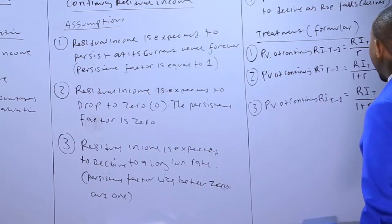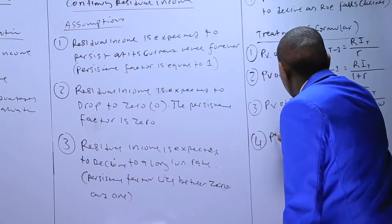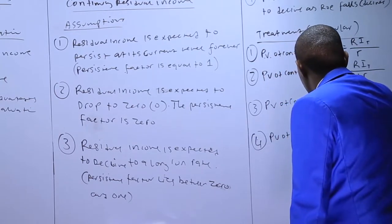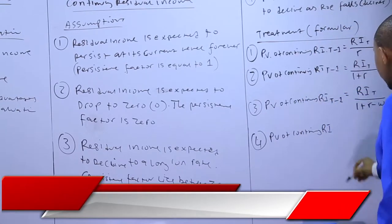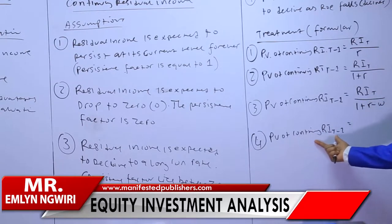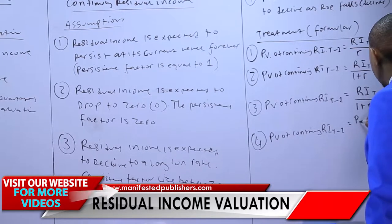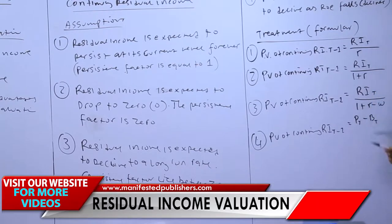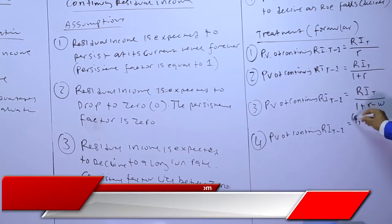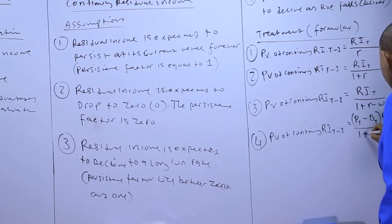Moving on to the fourth assumption: residual income is expected to decline as ROE falls. The present value of continuing residual income at time t minus one is computed as pt minus bt — the market price minus the book value — multiplied by the residual income at time t, RI_t, discounted against one plus r.